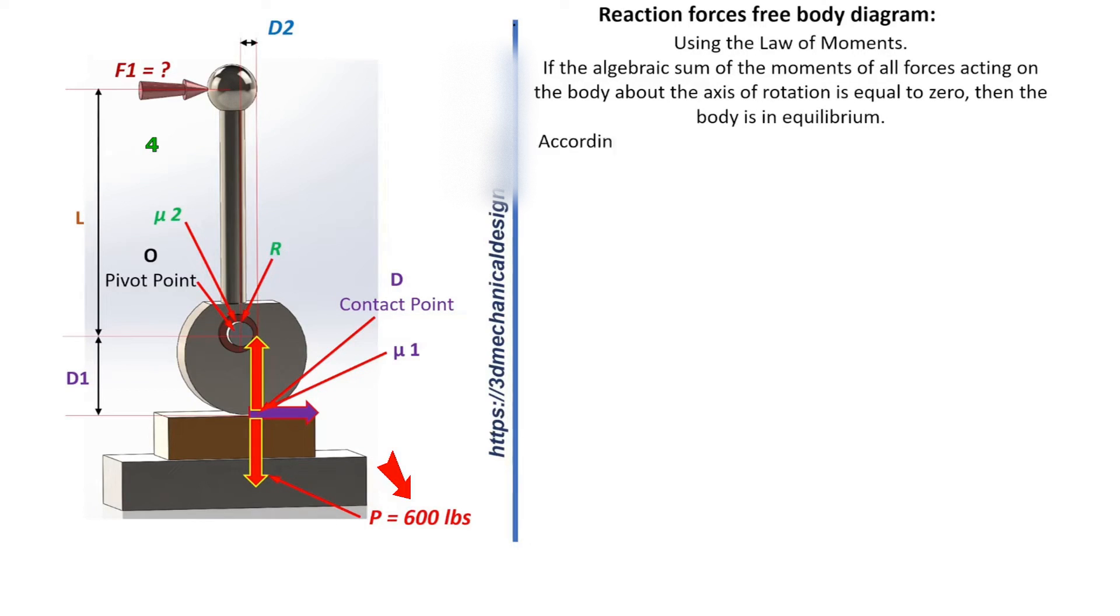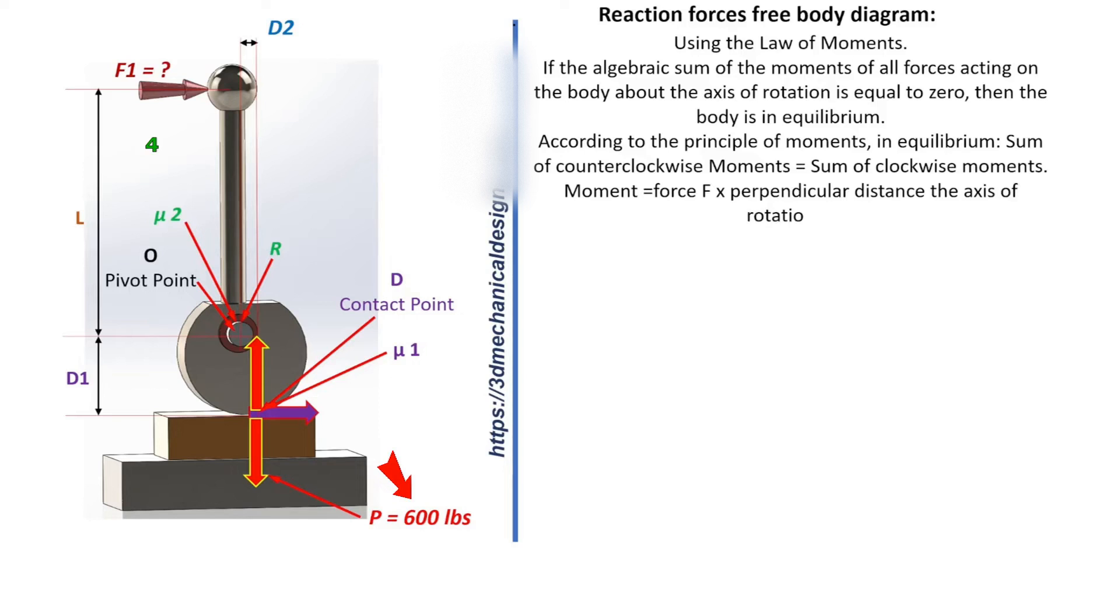According to the principle of moments in equilibrium, sum of counterclockwise moments equals sum of clockwise moments. Moment = force F × perpendicular distance to the axis of rotation R. Sum of moments from center of pivot point = 0.